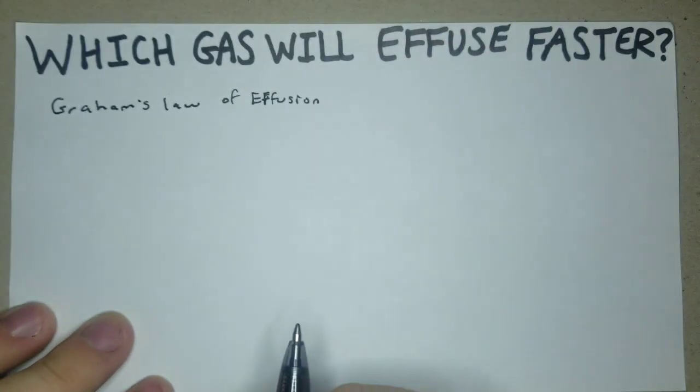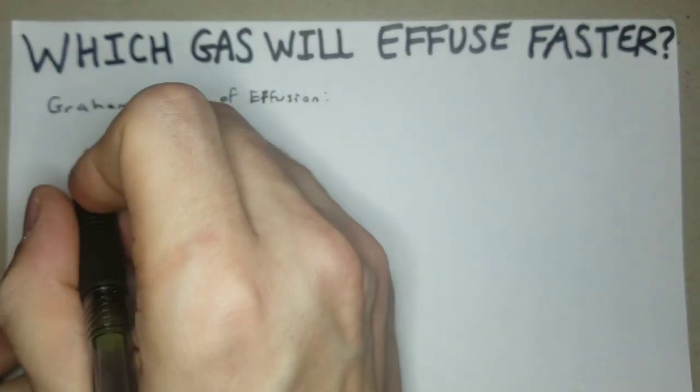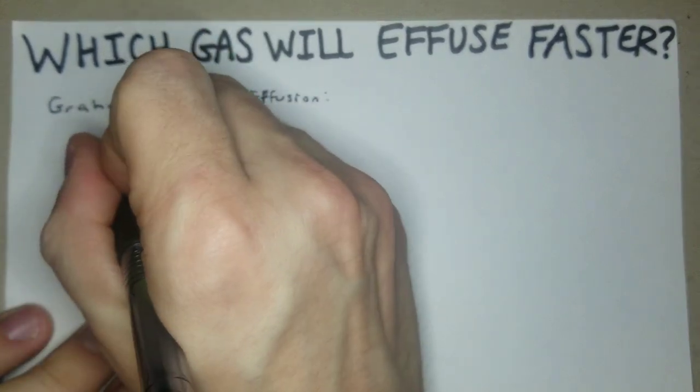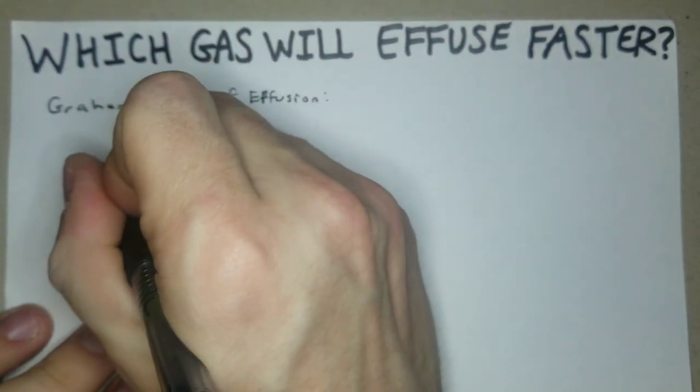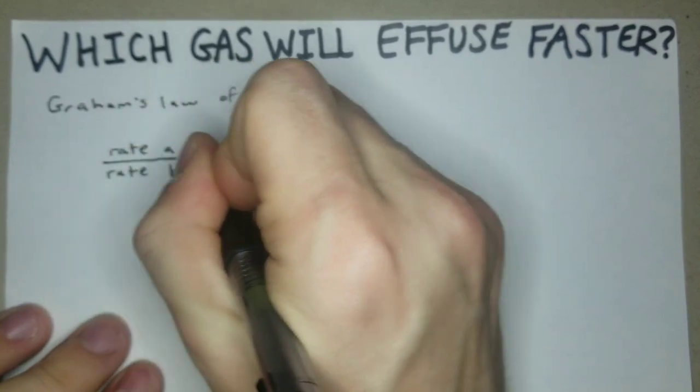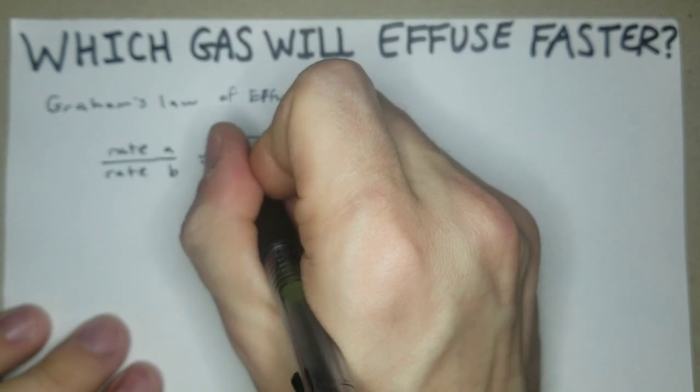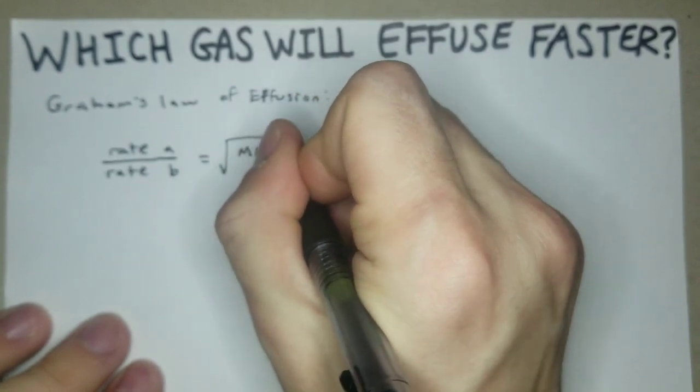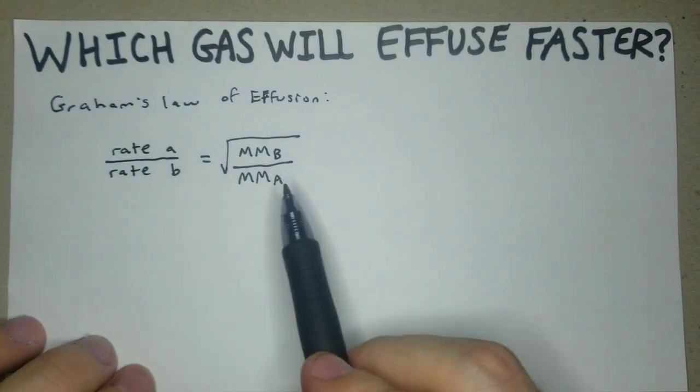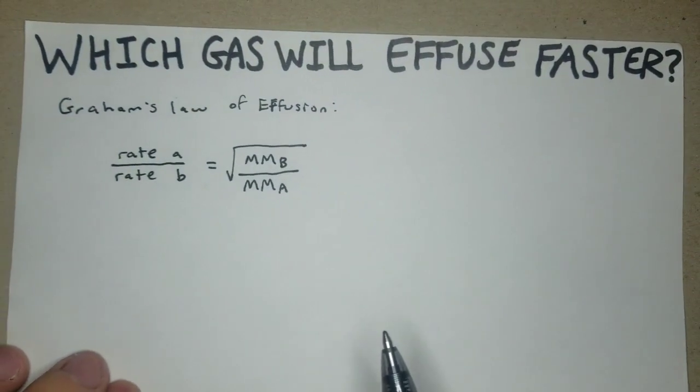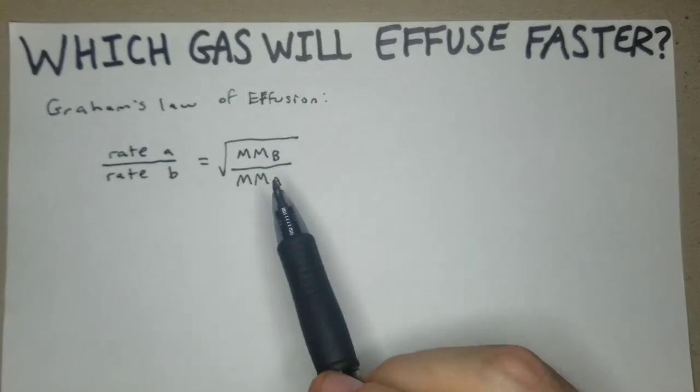Graham's law of effusion really boils down to one equation: rate a over rate b is equal to the square root of the molar mass of b over the molar mass of a. So you kind of got to be careful of the a and the b there, they kind of swap.